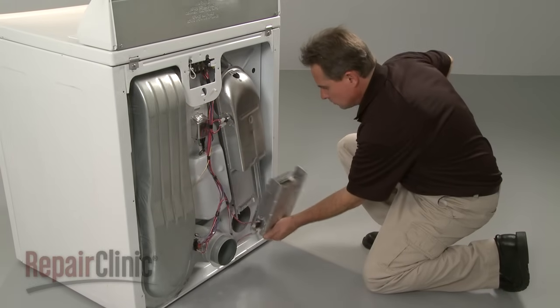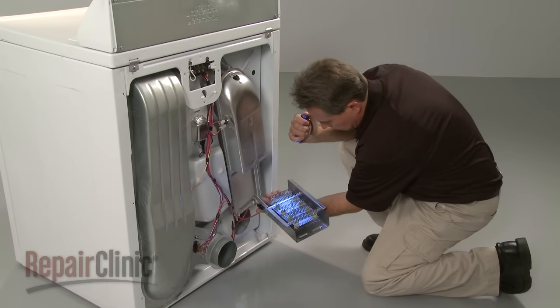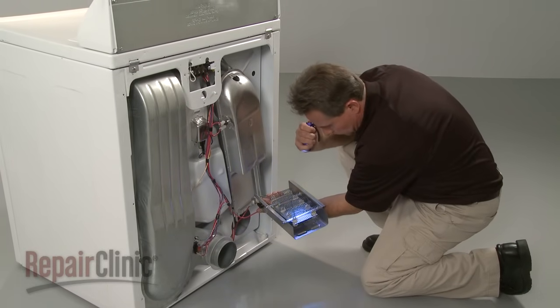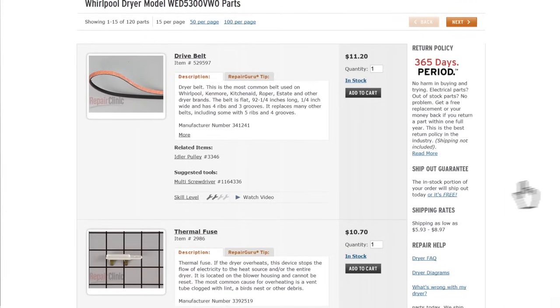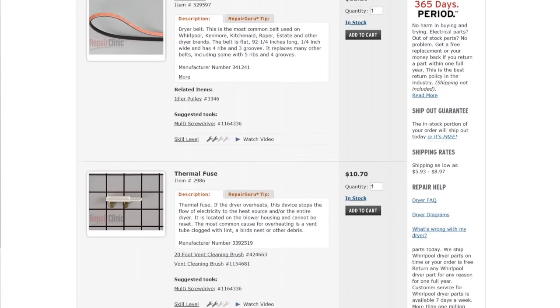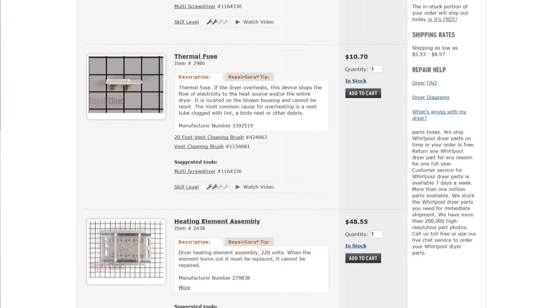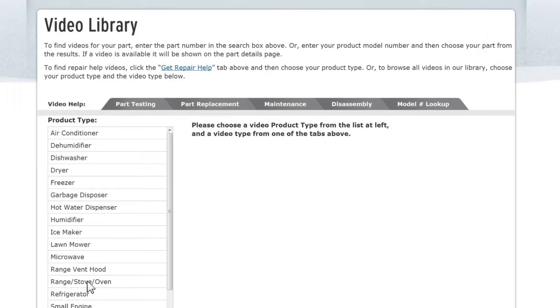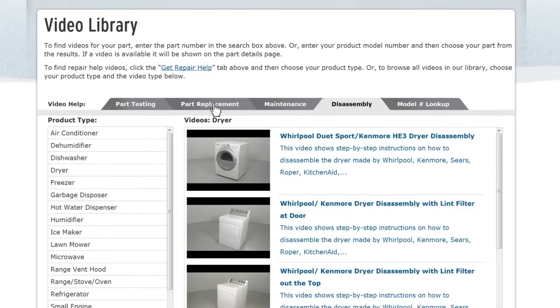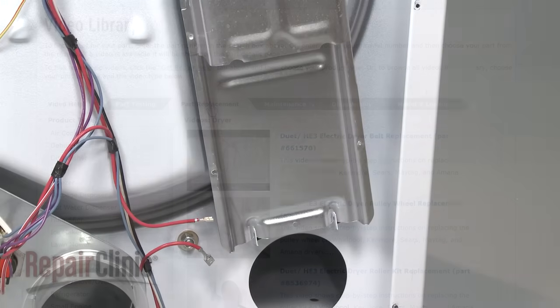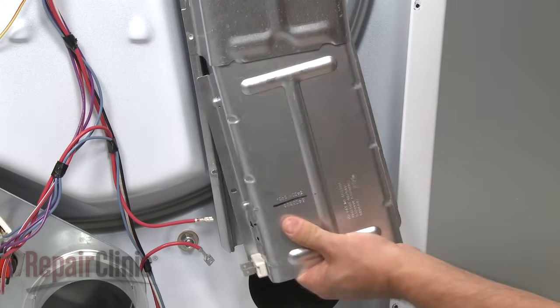If you're experiencing a problem with your dryer, Repair Clinic has a solution. Enter the appliance's full model number in our website's search engine for a complete list of compatible parts. Our site also has an extensive selection of instructional videos to assist you, covering topics like part testing, disassembly, and part replacement. At Repair Clinic, we make fixing things easy.